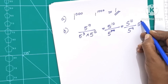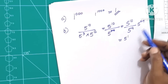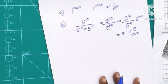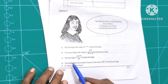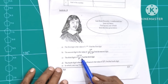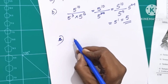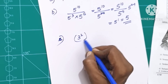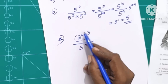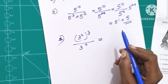That is 5 raised to 10. Find the third digit: 3 squared, all raised to 3, divided by 3 raised to 4. So we have 3 squared all raised to 3, which gives 3 raised to 6, divided by 3 raised to 4.